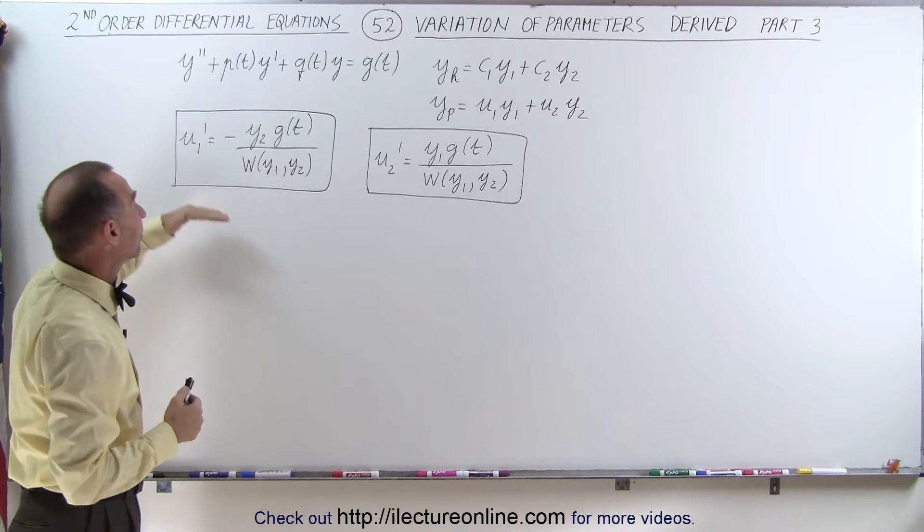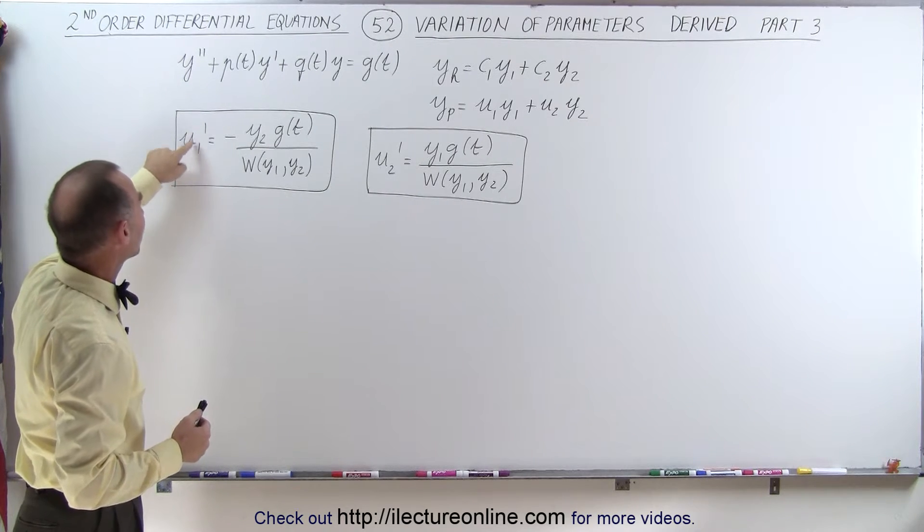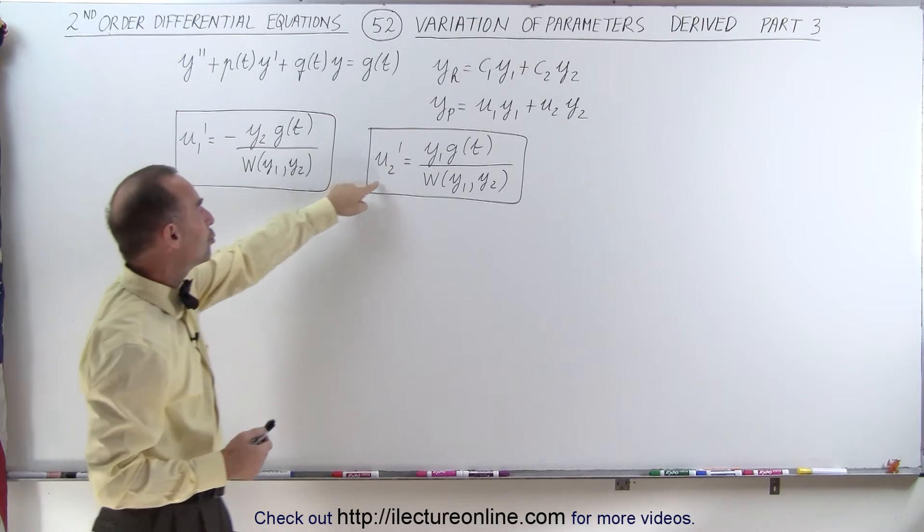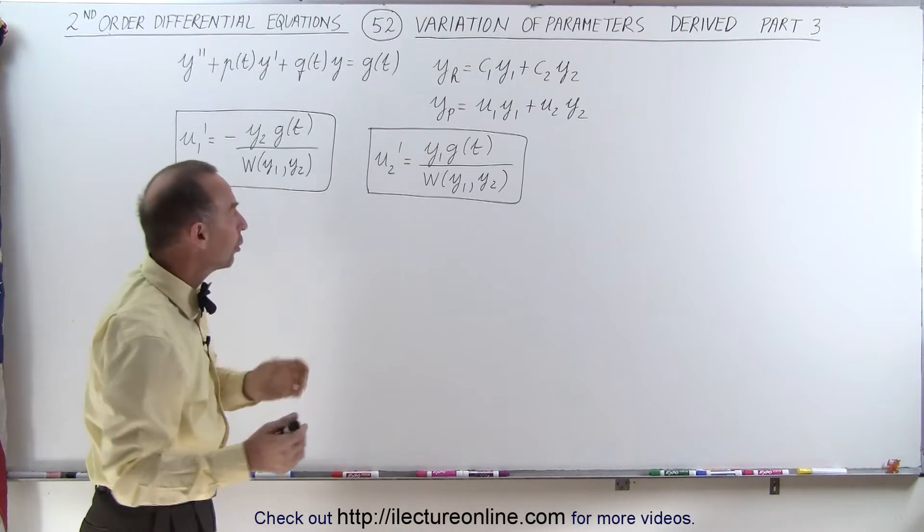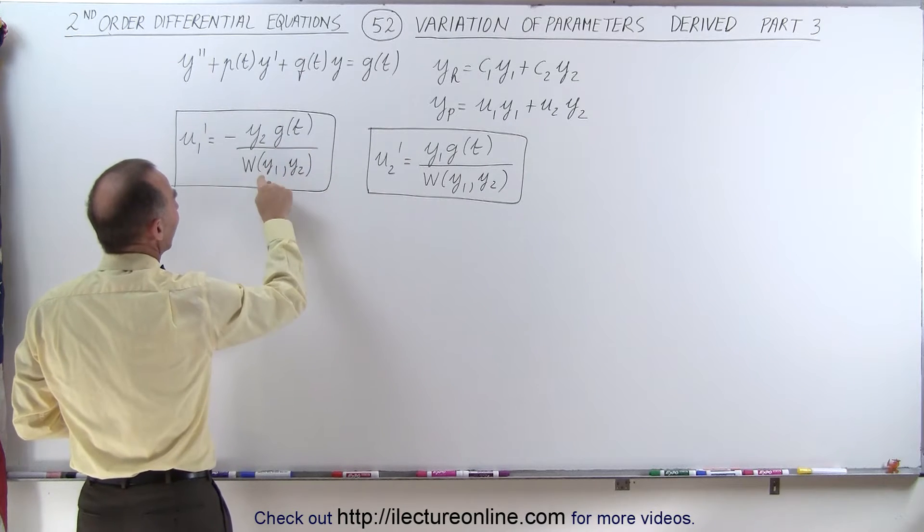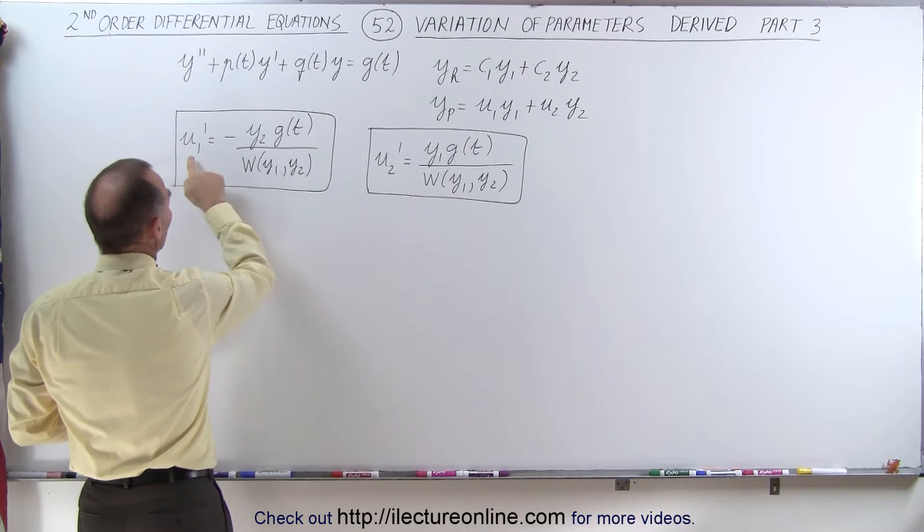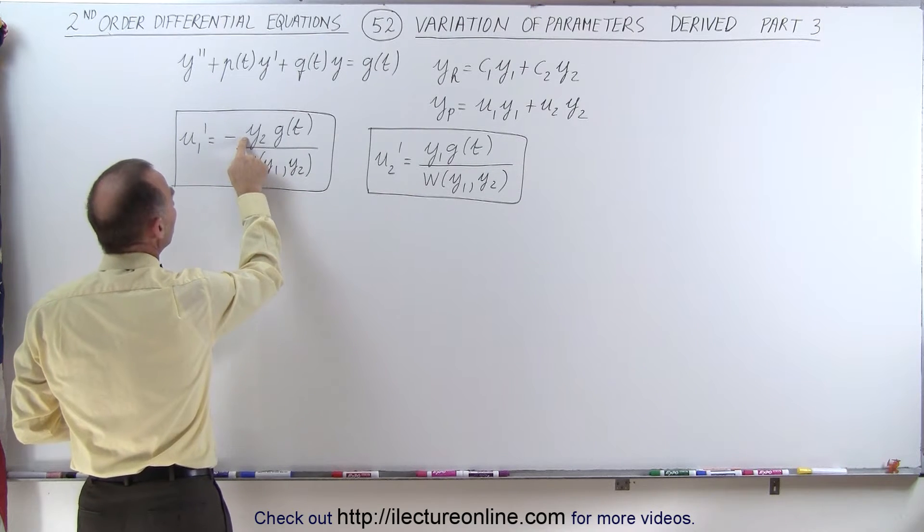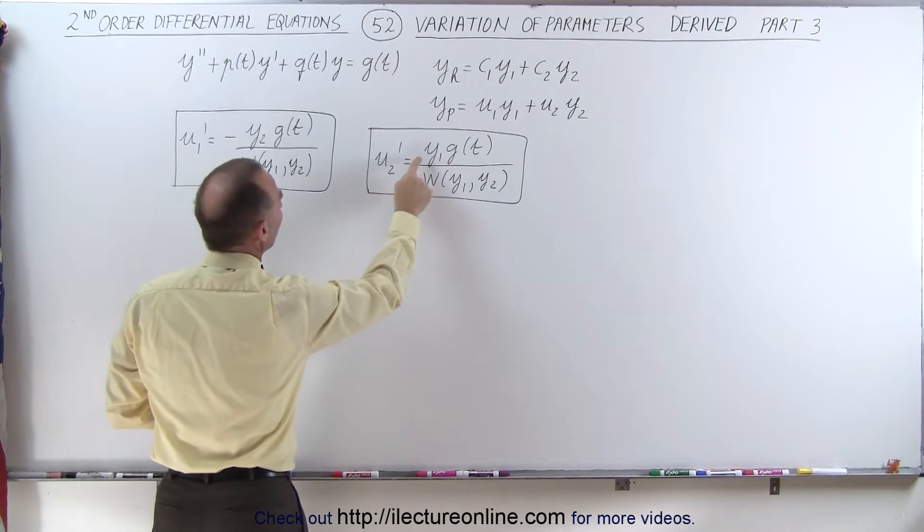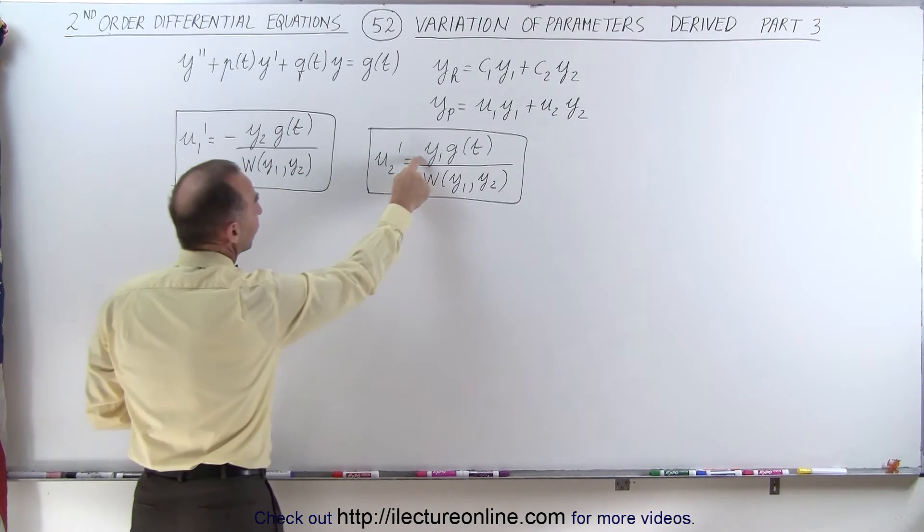On the previous video, we finally got this far. We were able to come up with the u1 prime equation and the u2 prime equation. If you take a close look, they look very similar. Both of them have g(t) divided by the Wronskian of y1 and y2, except on u1 prime we have y2 in the numerator, and on u2 prime we have y1 in the numerator. Notice that this is negative and this is positive.